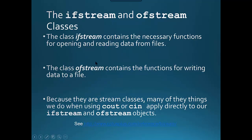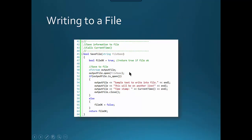For writing to a file, we're going to use the ifStream and ofStream classes. ifStream contains the necessary functions for opening and reading data from files, and ofStream contains what you need to write to a file. We use ifStream to read from a file and ofStream to write to a file. They work exactly the same way cout and cin work, so you already know most of what you need. When you turn off your program, anything in variable memory goes away — if you want to preserve information between runs, you need to write to the hard drive.